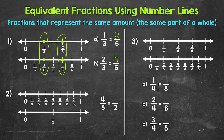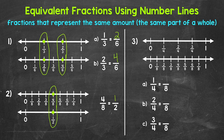Let's move on to number 2, where we have 4 eighths is equivalent to how many halves. The top number line shows eighths, and the bottom number line shows halves. 4 eighths is right here, and we can see that 1 half is at the same place on the number line. 4 eighths and 1 half are equivalent fractions.